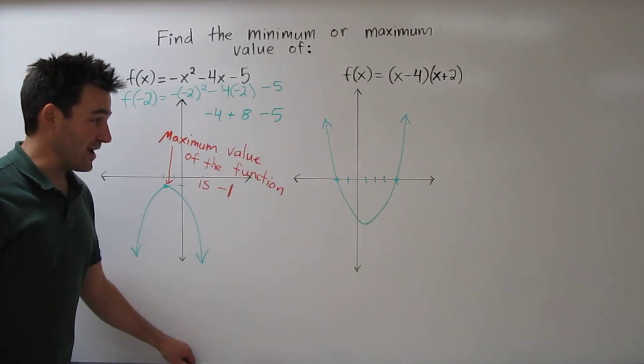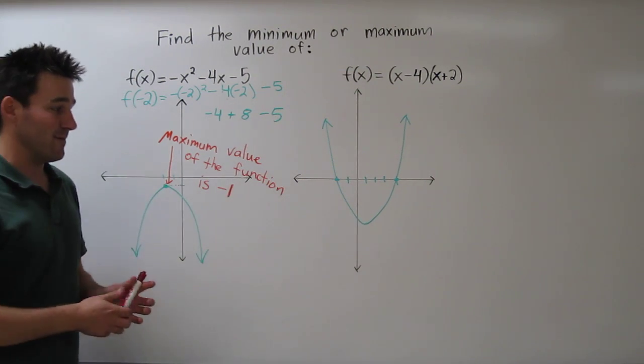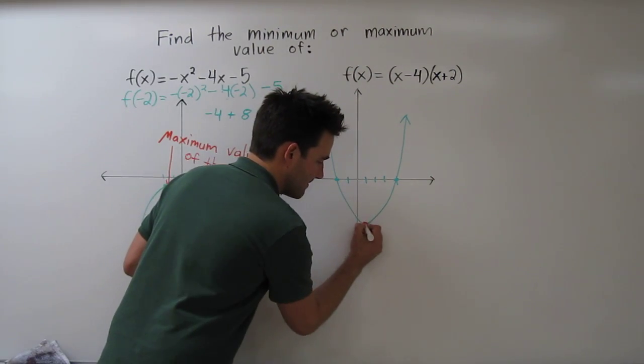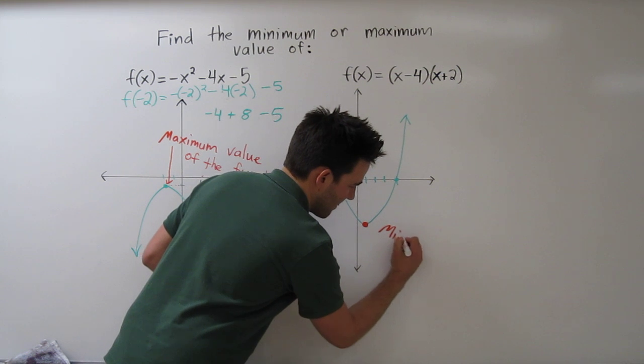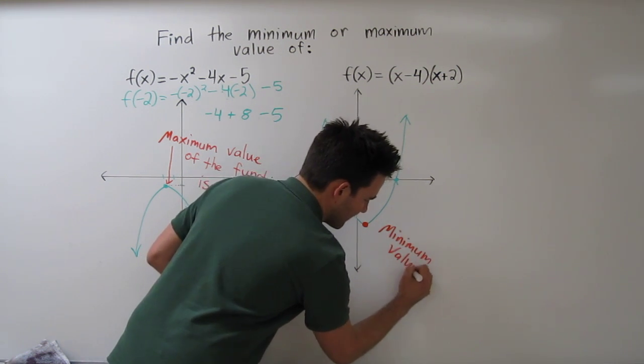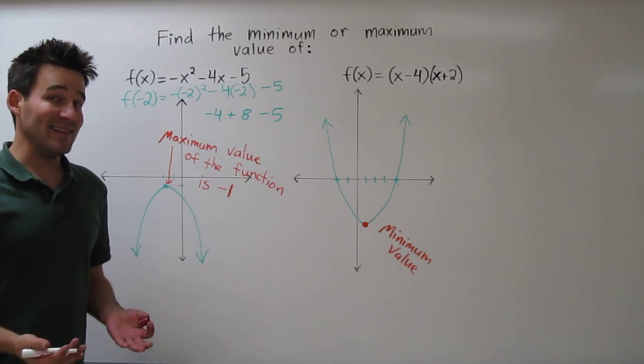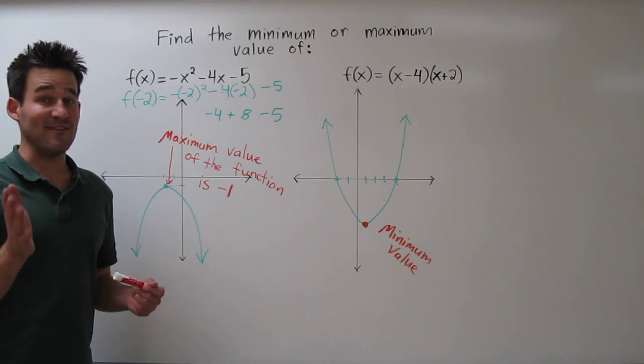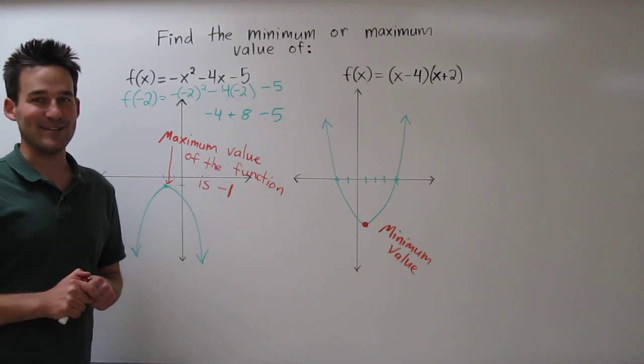So at this point, I can already tell this is going to have a minimum value. Now, how do we find that minimum value? I'm going to leave that up to you. Good luck.